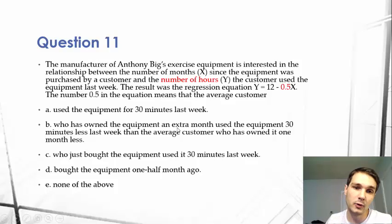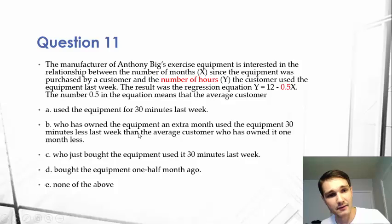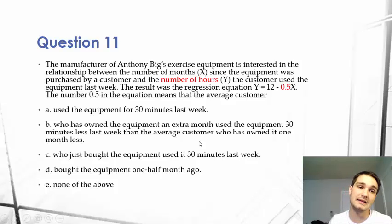B, who has owned the equipment an extra month, used the equipment 30 minutes less last week than the average customer who had owned it one month less. So this is going to be your correct answer. It's telling you exactly what 0.5 means in this equation. So for every extra month, the customer will use the equipment 30 minutes less than the week previous.